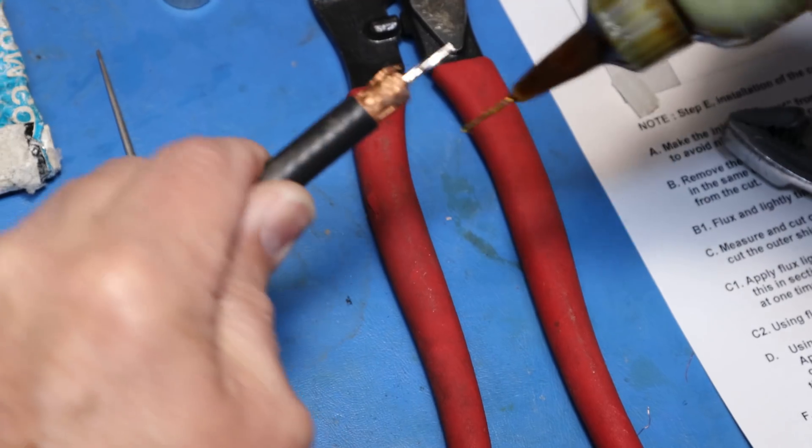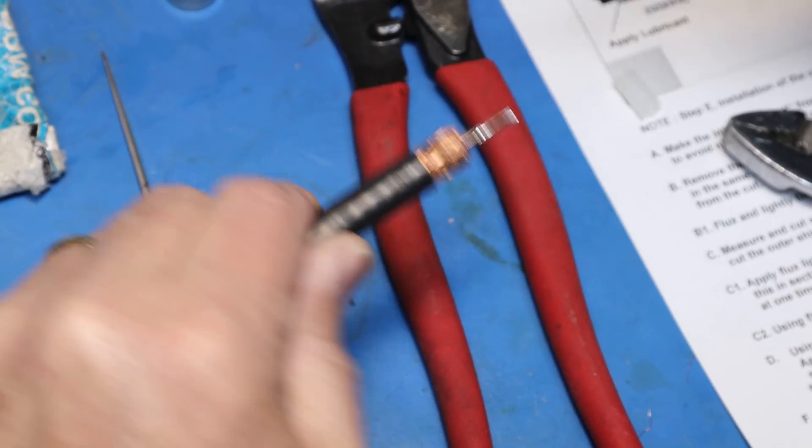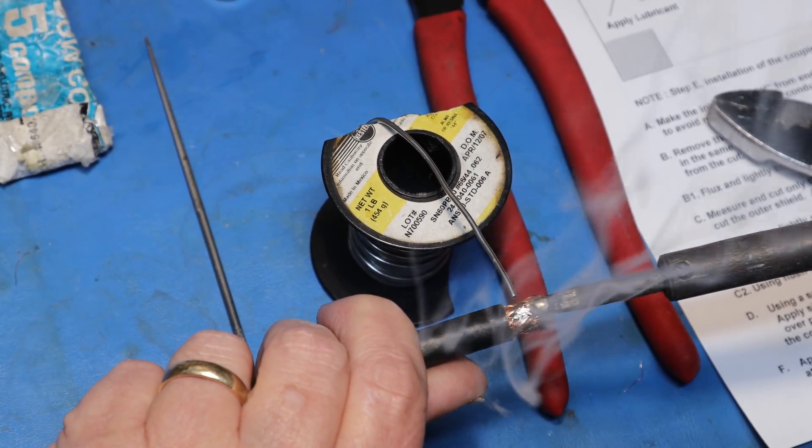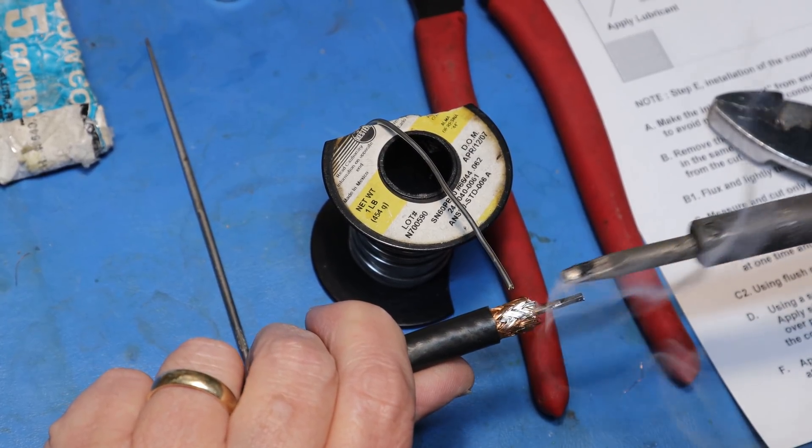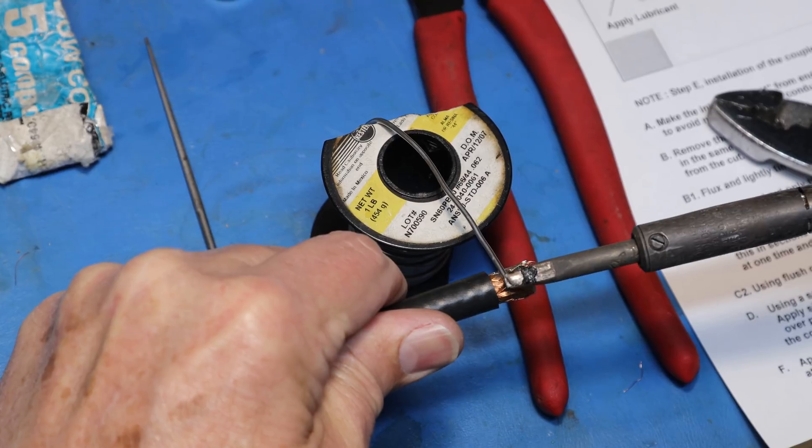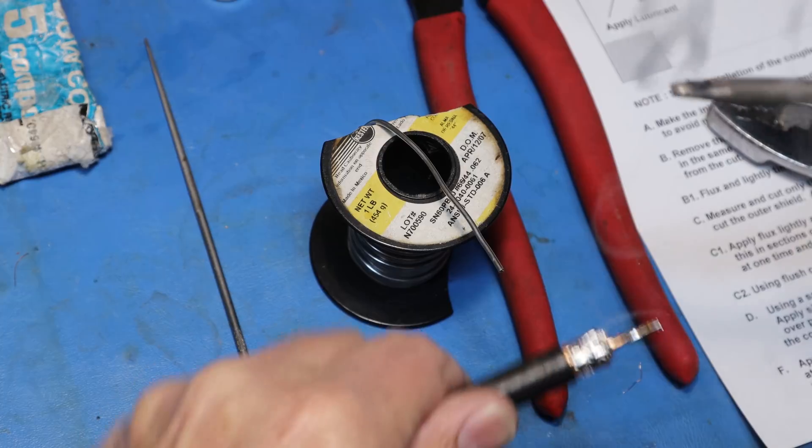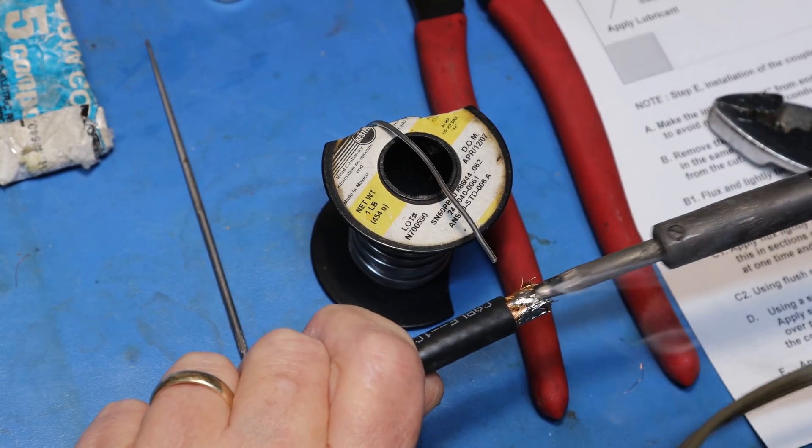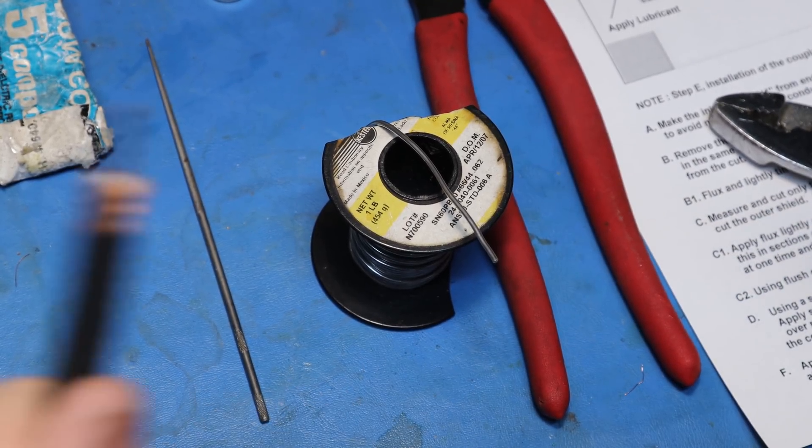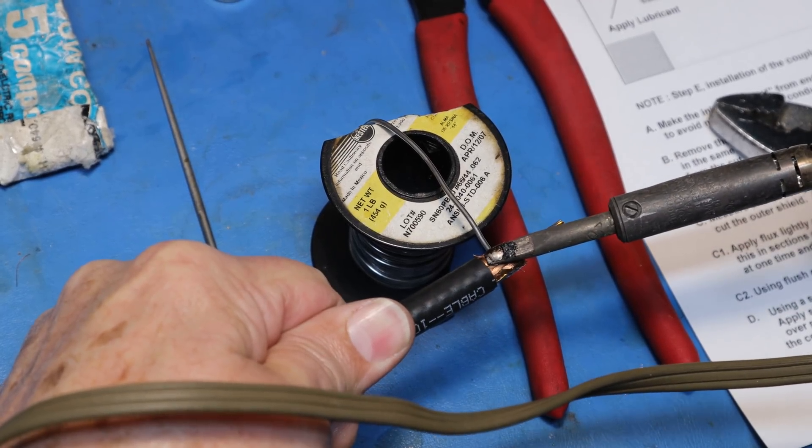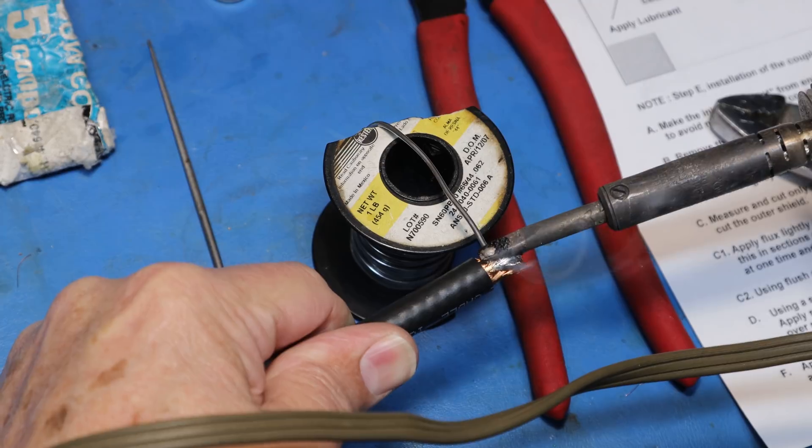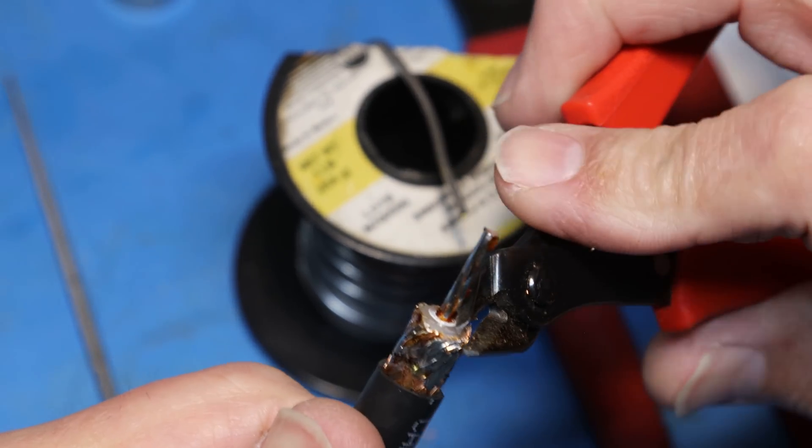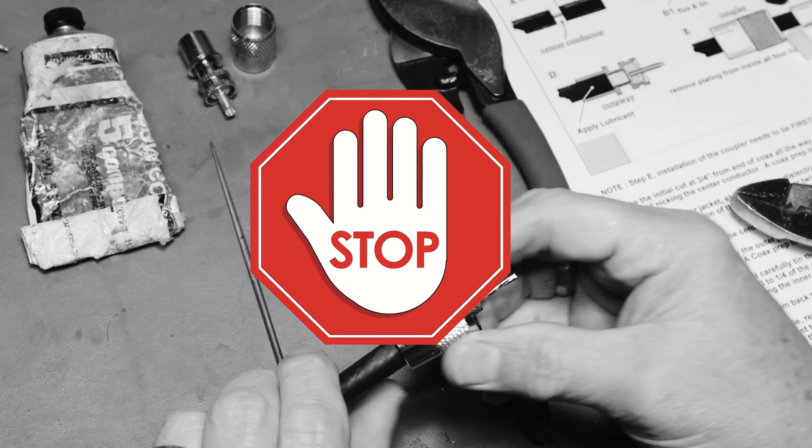Next, we will want to apply a little flux to the outer shield. And we are going to tin that as well. That will keep this from unraveling and fraying during the next portion of the connector assembly. The key while doing this is to not apply too much heat as to melt the center dielectric. Be sure to try and coat all sides of the braided shield. I also like to take the close cutting cutters and trim back some of the braided shield away from the dielectric.